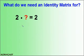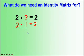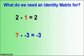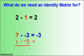Next, let's take a look at something we know. 2 times what is going to give me 2? We know that 2 times 1 is 2, so we get a true statement. The same thing can be said if we think about what times negative 3 gives us negative 3 — again, 1 times negative 3 gives us negative 3. Once again, we get a true statement.